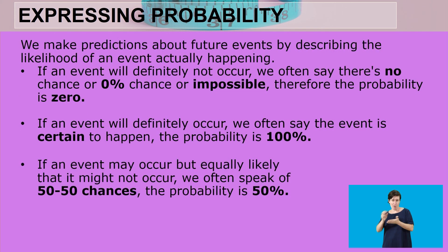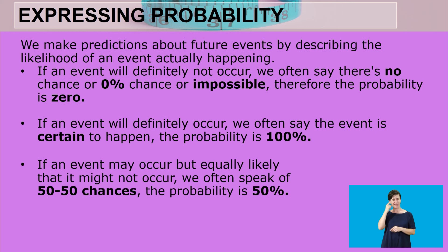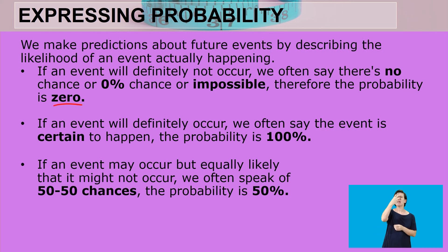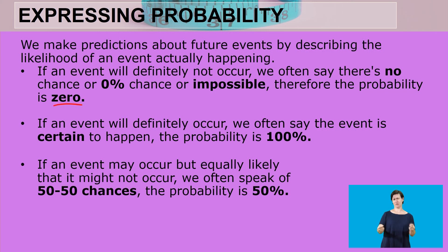We often make predictions about future events by describing the likelihood of an event happening. If an event will definitely not occur, we say there's no chance, zero percent, or it is impossible — the probability is zero. An example of such an event is saying pigs will fly tomorrow. We know there's no chance that will ever happen, so the probability is zero.